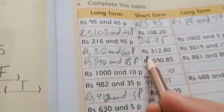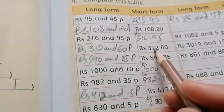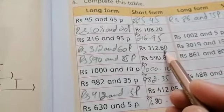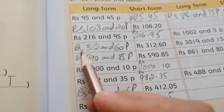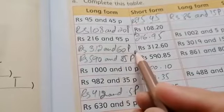They have given a short form. We will write its long form. The short form is Rupees 312.60. How can we write it in long form? Rupees 312 and 60 paisa.